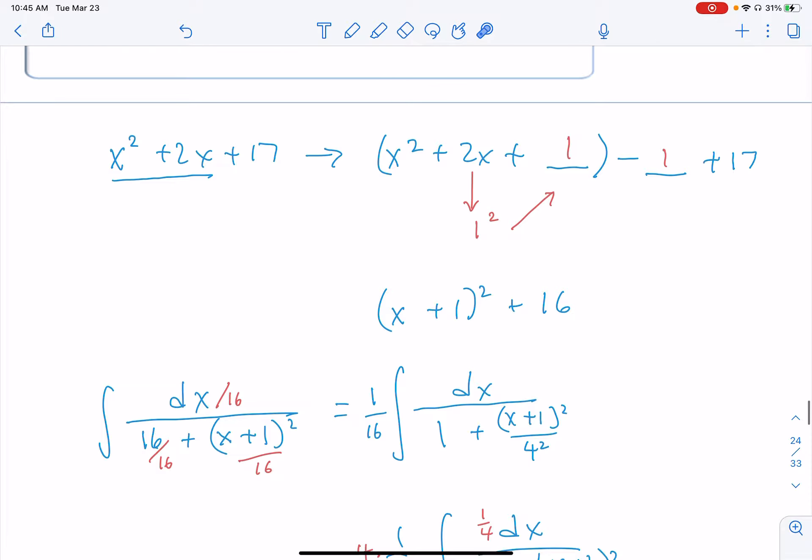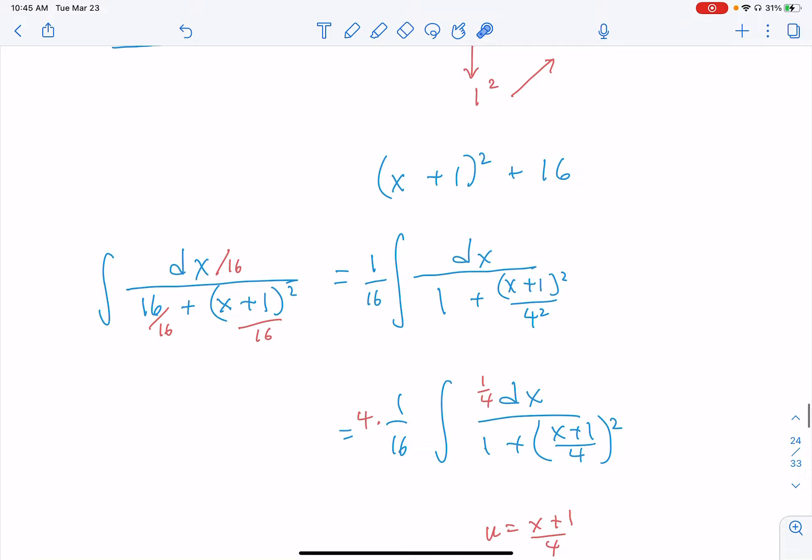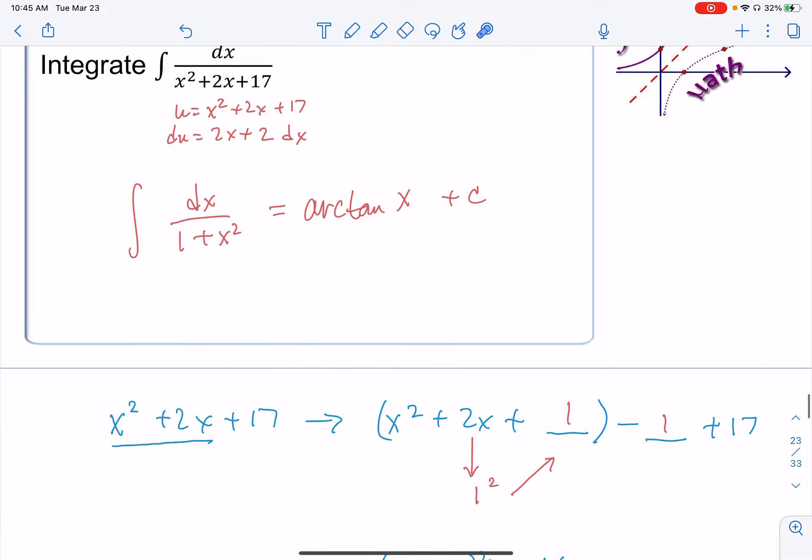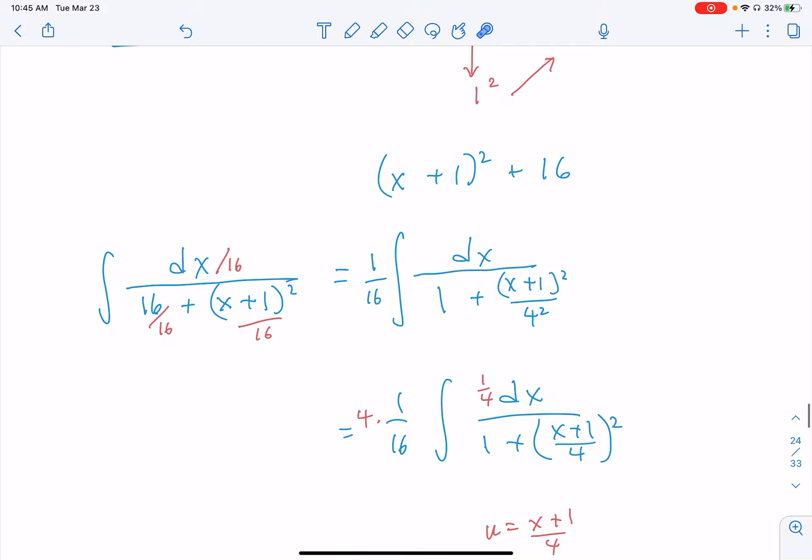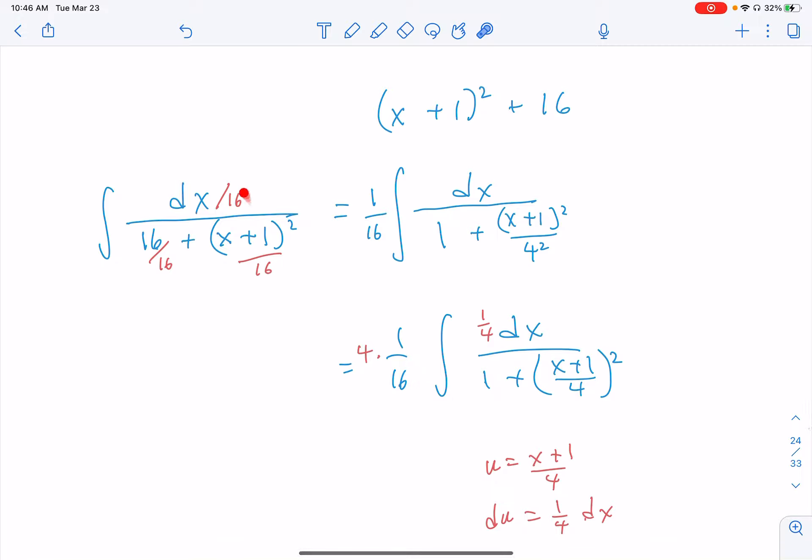Remember after we completed the square in Example 8, we had to go through this whole process of dividing by 16 to make it look right. The antiderivative was dx/(16 + (x+1)²). What if we just had an antiderivative rule that applied to this form and we wouldn't have to do all that work?